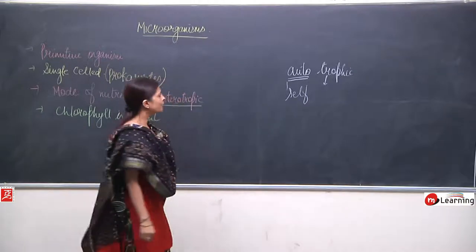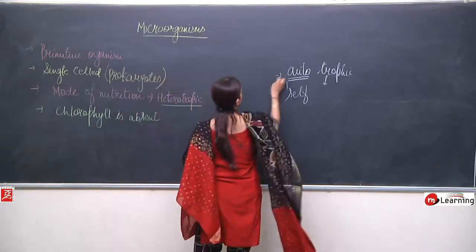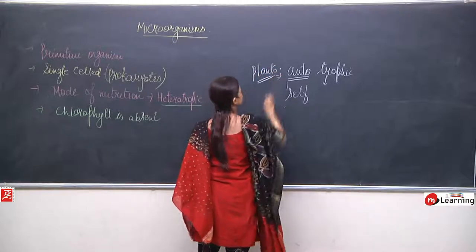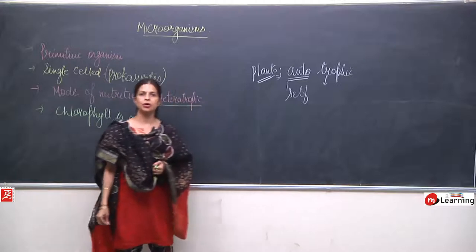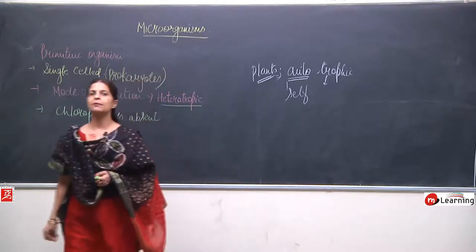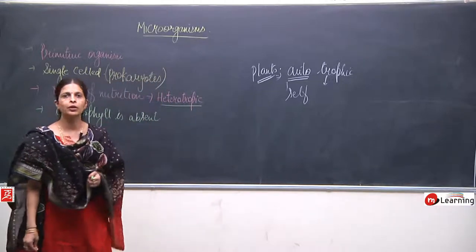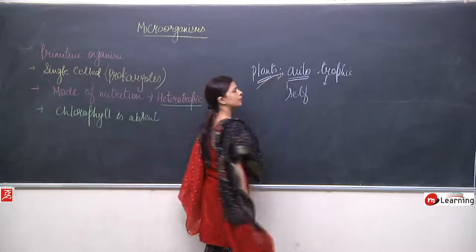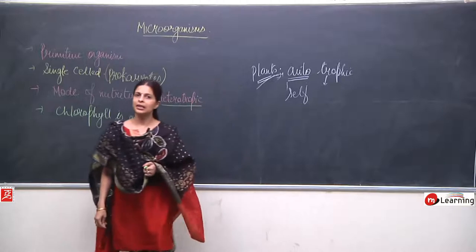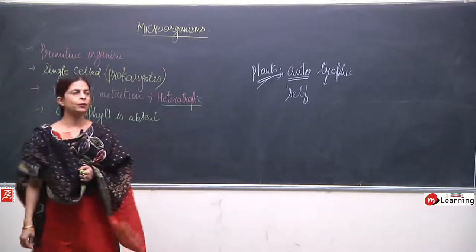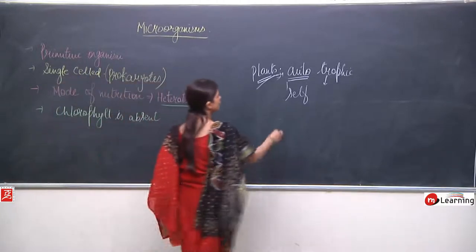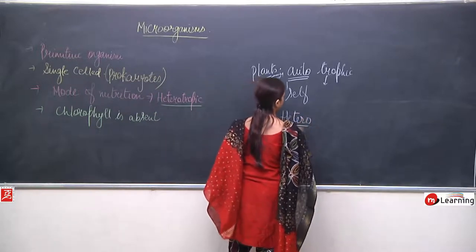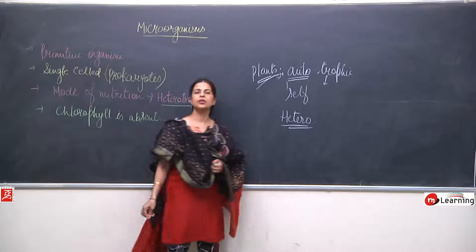Plants are autotrophic. Why are plants autotrophic? Because they can prepare their own food. But the ones which cannot prepare their own food are known as heterotrophic.